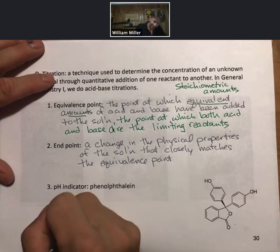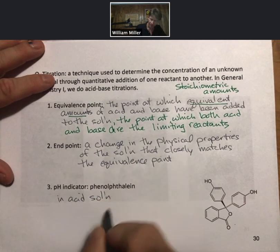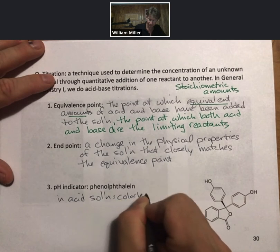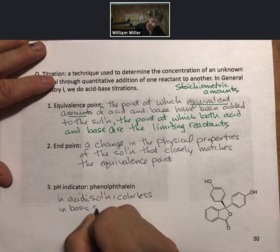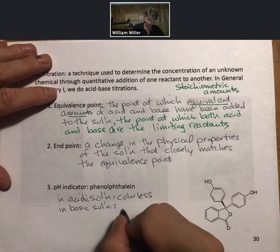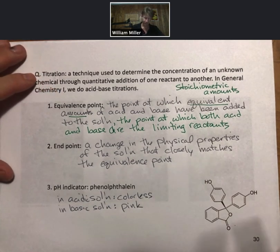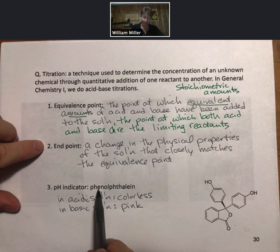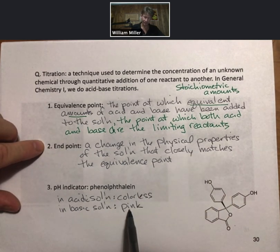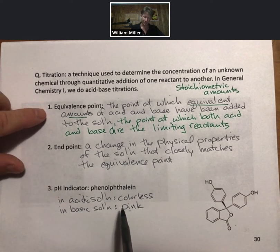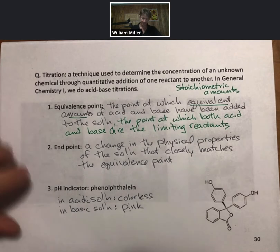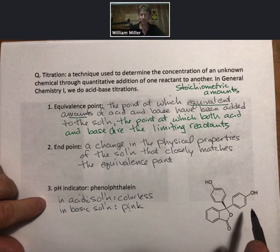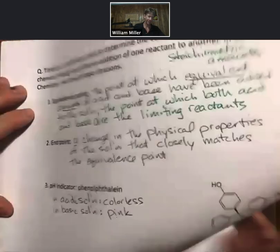In acidic solution, phenolphthalein is colorless. In basic solution, phenolphthalein is pink. The pH indicator as an end point - the physical property change is the color of the solution. When it goes from acidic to basic, you are going through a neutral solution, and a neutral solution has equivalent or stoichiometric amounts of acid and base.